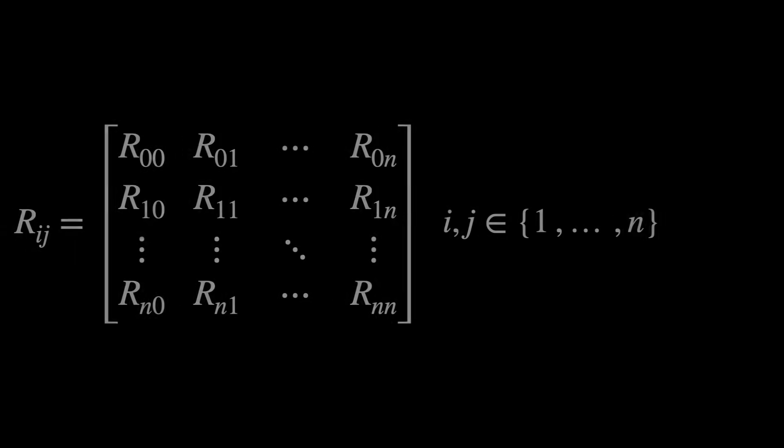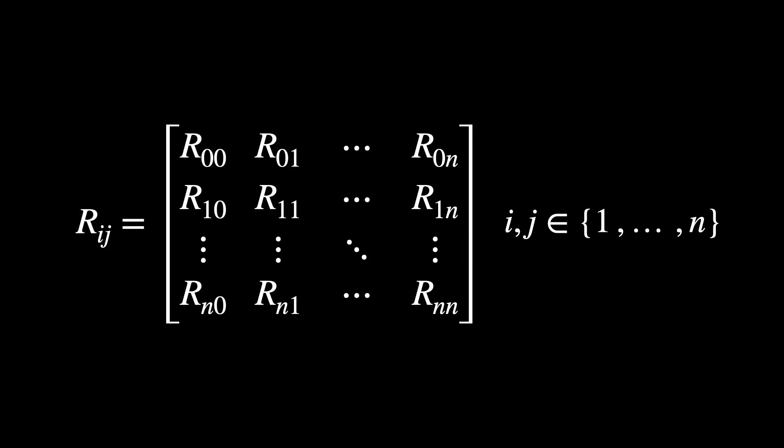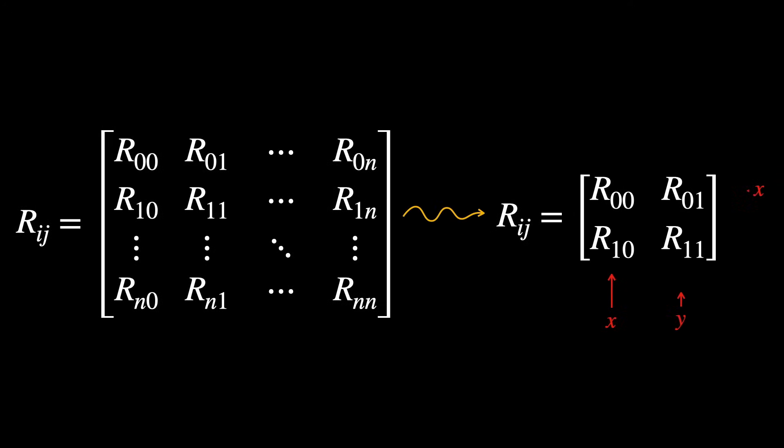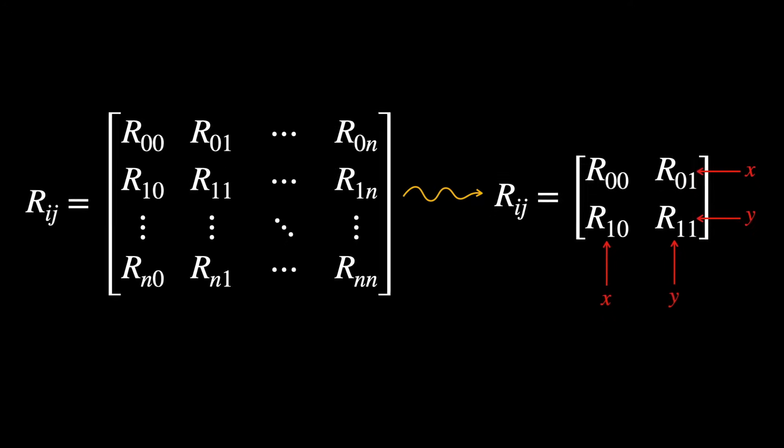This is a representation of a general Ricci tensor for an n-dimensional space. In 2D, this curvature tensor becomes a 2x2 matrix that describes how space curves at a single point.